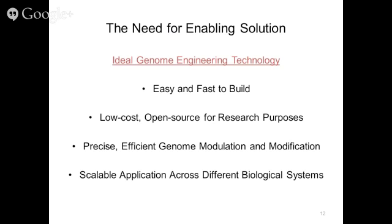Before getting into the detail, we can imagine what the desired, ideal genome engineering technology would look like. Here are four different criteria that we can assess a genome engineering technology by. The first characteristic of an ideal technology would be that it should be easy and fast to build, meaning that we can scale it up very easily and build as many targets as we like, given the big data biology challenge.